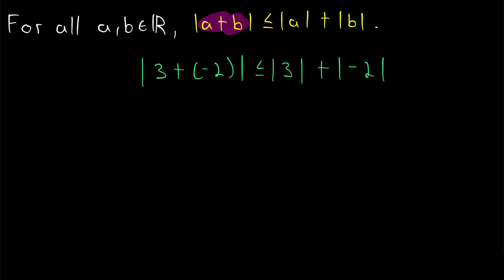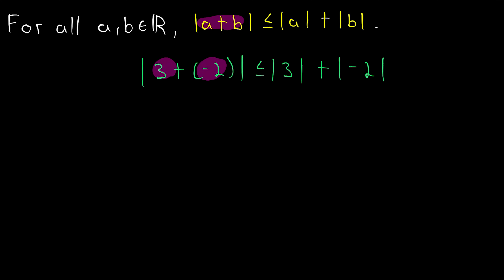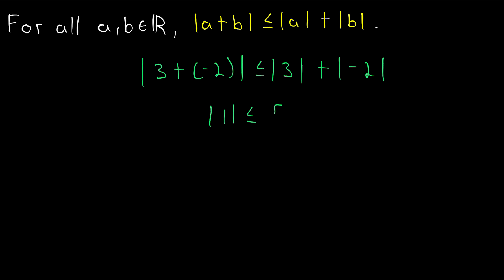If two real numbers have the same sign — both positive or negative — then the magnitude of their sum will be equal to the sum of their magnitudes. If one is positive and one is negative, then when we add them within the absolute value bars, their magnitudes will offset a little bit. Whereas when we add their individual magnitudes separately, they will not offset each other — they'll just combine to make a bigger number. In this case, we see that the absolute value of 1 is less than or equal to 3 plus 2, which is 5, and that is certainly true.